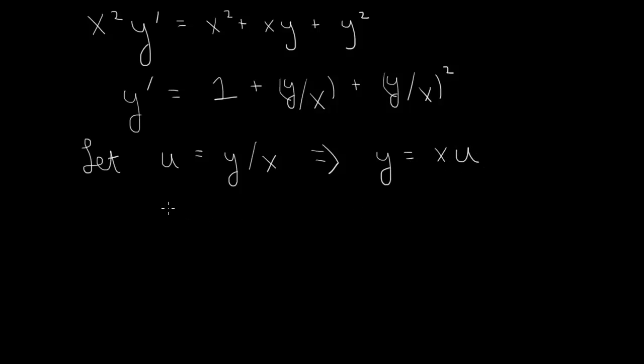So taking the derivative, we get y prime equal to the derivative of the first times the second, u, plus the first times the derivative of the second, x u prime.